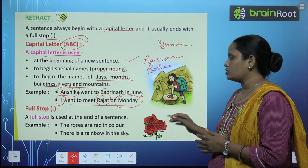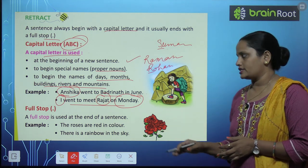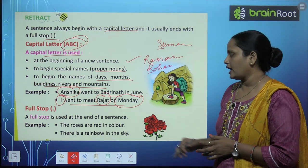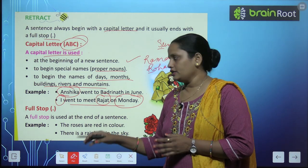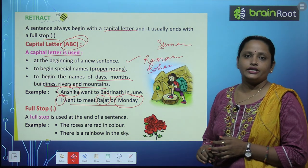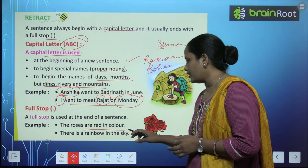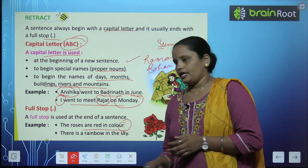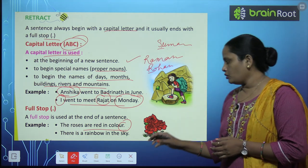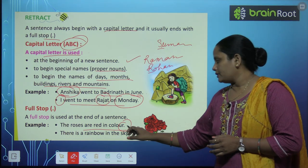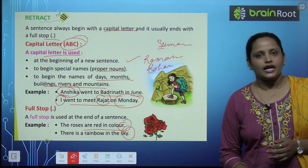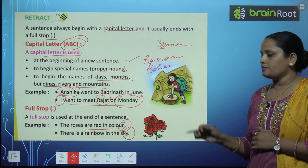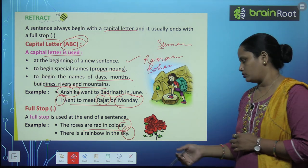Now let's learn about full stop. A full stop is used at the end of a sentence. Sentence के end में हम इसे लगाते हैं. For example: "The roses are red in color." — sentence यहाँ पे खत्म हो रहा है तो हमने full stop लगा दिया. "There is a rainbow in the sky." — यहाँ पे sentence खत्म हो रहा है तो sky के बाद full stop लगा दिया. तो full stop जब sentence खत्म हो रहा हो तब लगाना है.